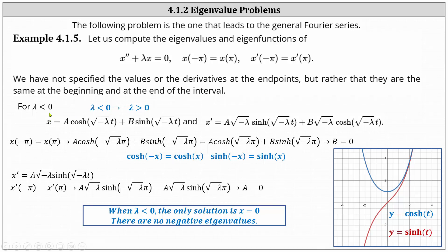Let's begin with lambda less than zero. Recall if lambda is less than zero, multiplying both sides by negative one gives us negative lambda greater than zero. Because the characteristic equation has two distinct real roots, the general solution can be written as x equals a hyperbolic cosine of square root negative lambda t, plus b hyperbolic sine of square root negative lambda t. We find x prime by differentiating with respect to t using the chain rule. Applying the condition x of negative pi equals x of pi and using hyperbolic trig identities, the hyperbolic cosine expressions on both sides are equal, but the hyperbolic sine functions are not, which indicates b must equal zero.